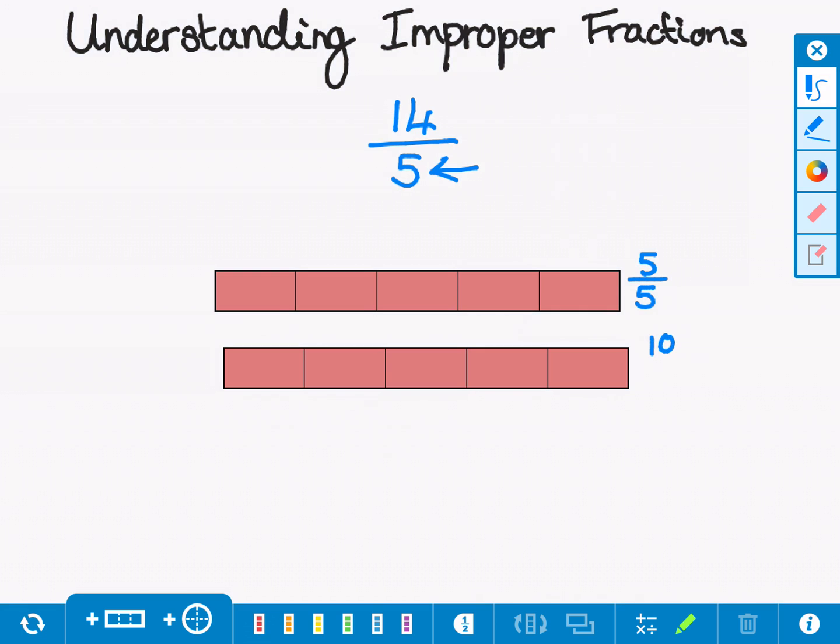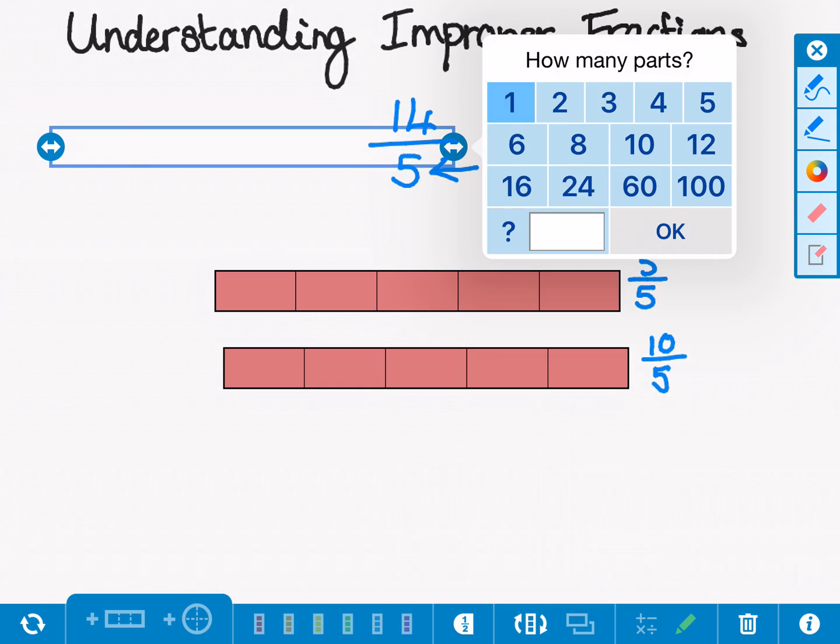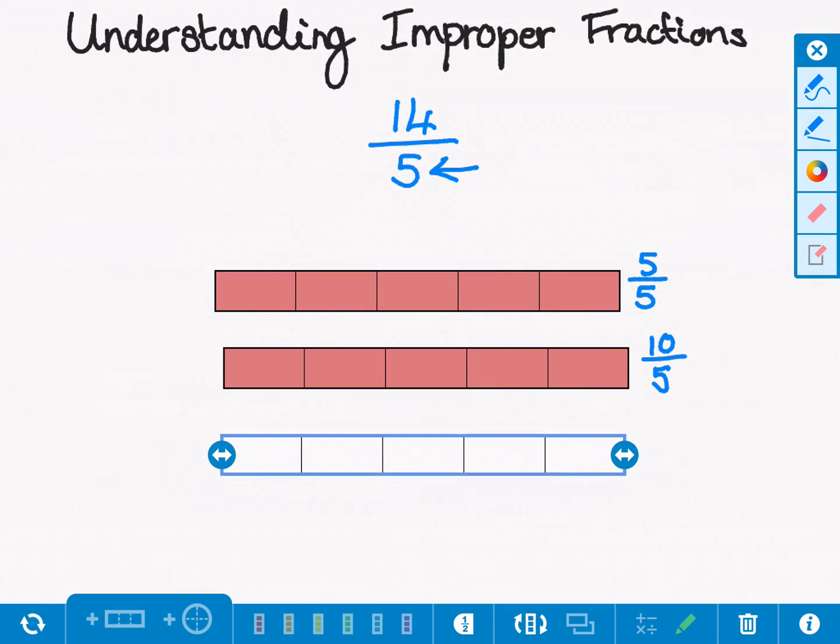I'm just going to record that down and again, I'm still not there. I need 14 fifths. So same as before, I'm going to get another bar and I'm going to shade those parts as well.